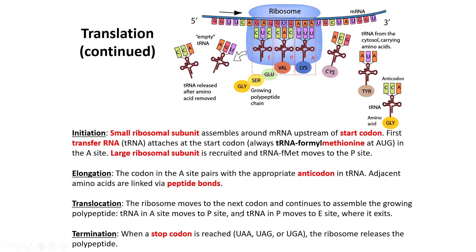Then translocation occurs where the ribosome moves to the next set of three and continues to assemble the growing polypeptide chain. When a tRNA enters the A site, the one already in the A site moves to the P site, a peptide bond is made, and then the empty tRNA in the P site moves to the E site before it leaves the ribosome. These tRNAs then need to be recharged with their appropriate amino acid. This will proceed until a stop codon is reached — one of UAA, UAG, or UGA — at which point the ribosome releases the entire polypeptide and disassembles.